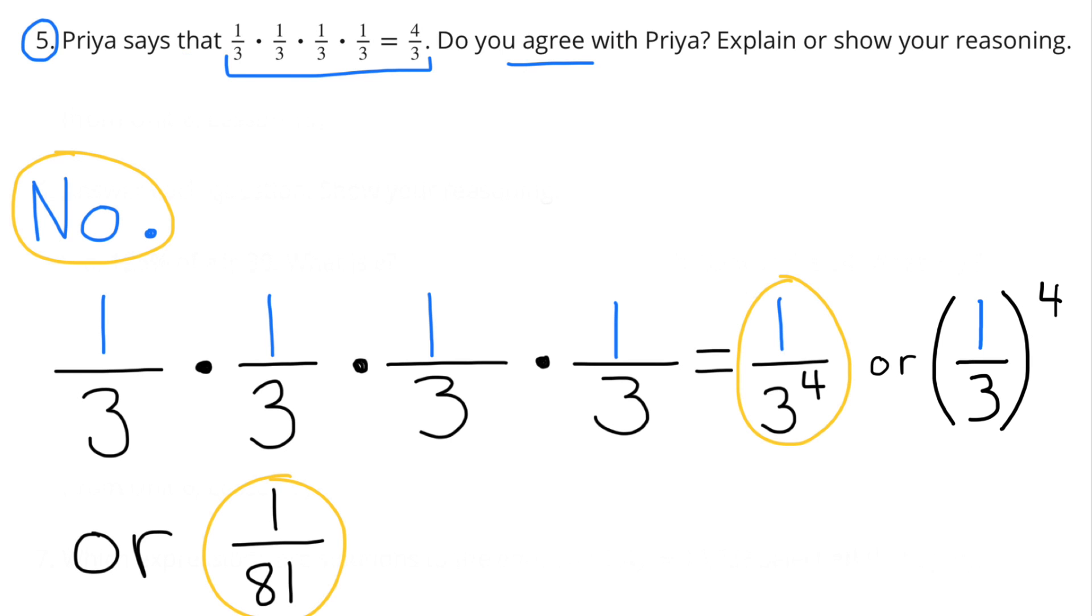Number 5. Priya says that 1 third times 1 third times 1 third times 1 third equals 4 thirds. Do you agree with Priya? Explain or show your reasoning. Well, first of all, I say no,